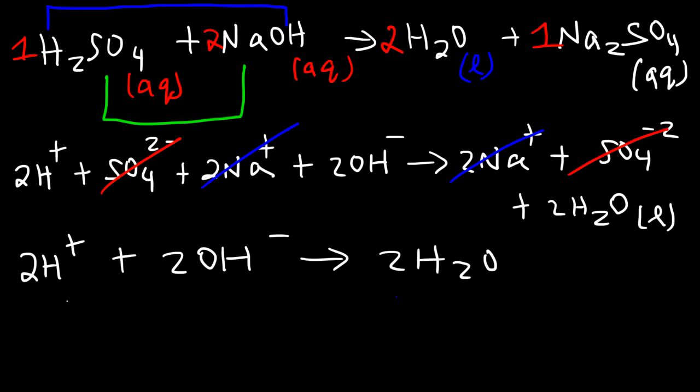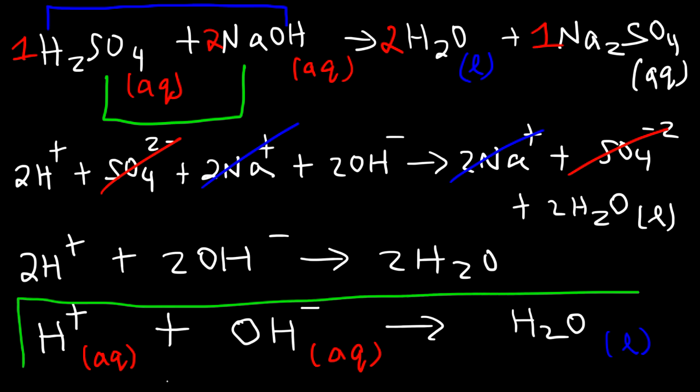So what we have left over is 2H plus plus 2OH which produces two water molecules. Now notice that we could divide everything by two. We can reduce the coefficients. And if you can, you should. So the balanced net ionic equation, it's going to be H plus plus OH minus produces one water molecule. So H plus is in the aqueous phase. Hydroxide is in the aqueous phase. And water is in the liquid phase. So this is our balanced net ionic equation.